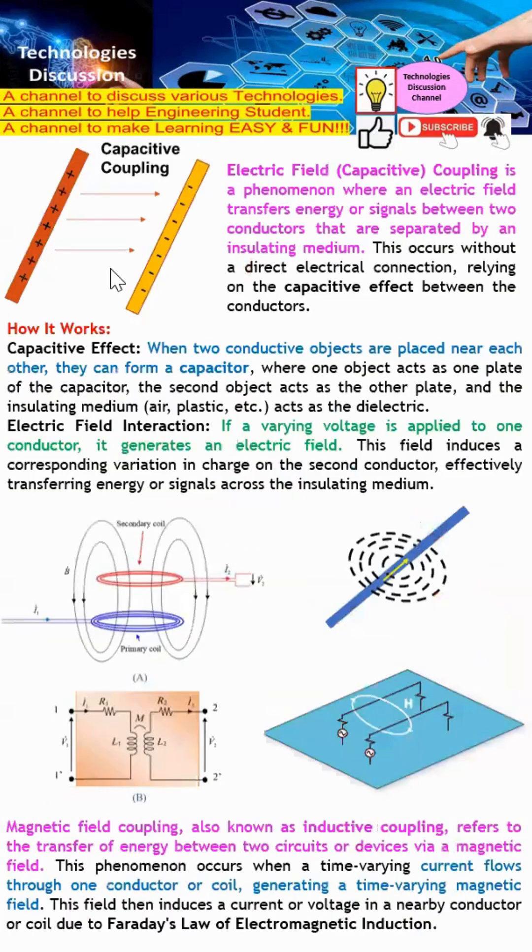This is what is actually capacitive coupling here. The electric field or capacitive coupling is a phenomenon where an electric field transfers energy or signal between two conductors that are separated by an insulating medium. This is one conductor, this is another conductor. This conductor has higher potential, so it will couple the energy over to another conductor which has lesser potential energy. This form here is what we call capacitive coupling or E-field coupling.